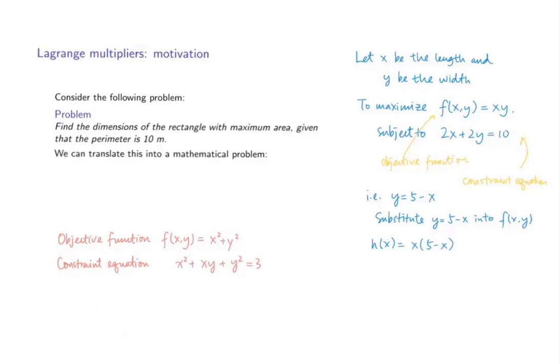However, next time we may have another objective function and constraint equation, such as having f(x,y) to be x squared plus y squared and the constraint equation to be x squared plus xy plus y squared equals 3. Then it is not always as easy as the previous case to make a substitution of y in terms of x.